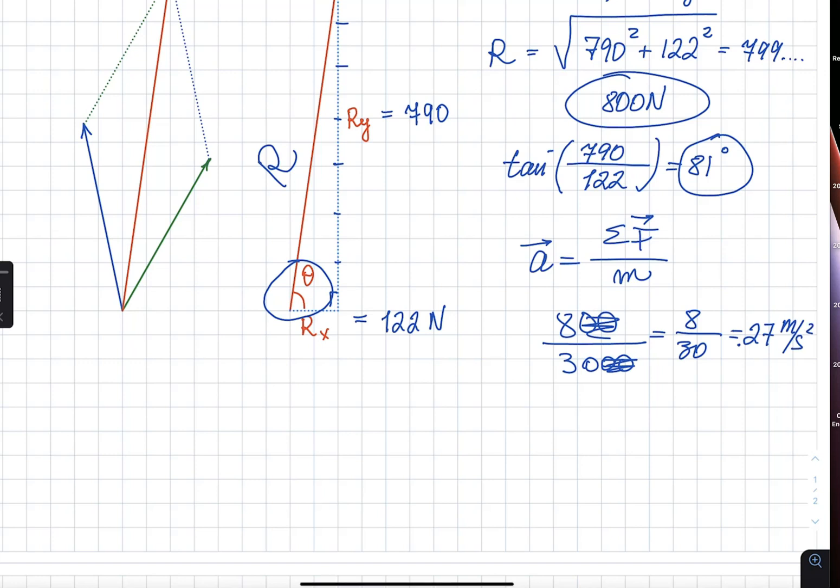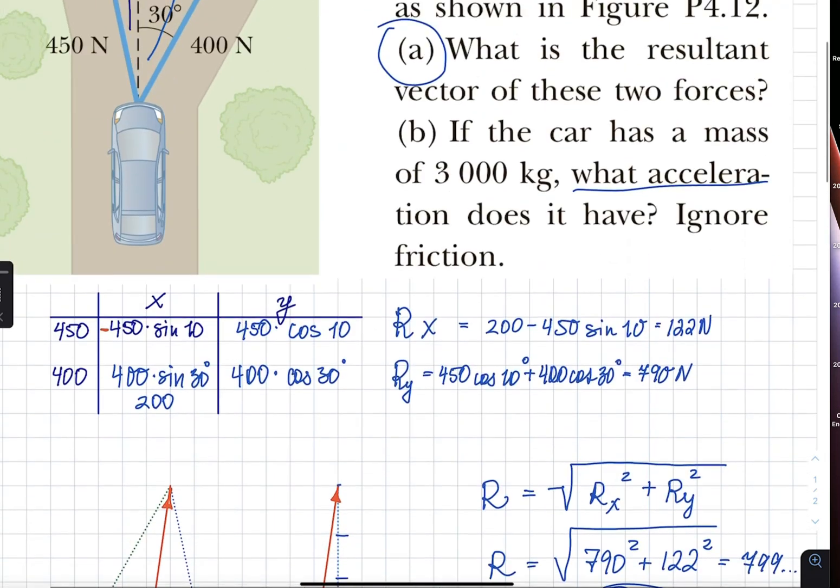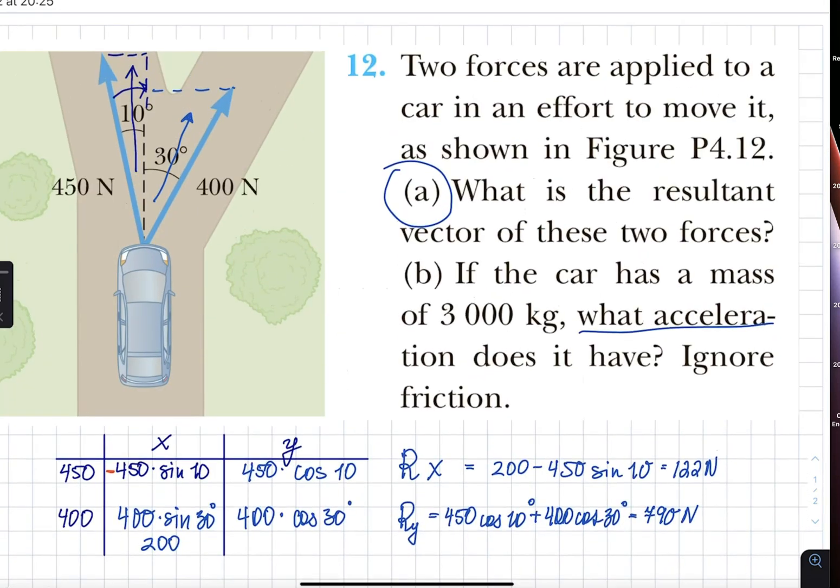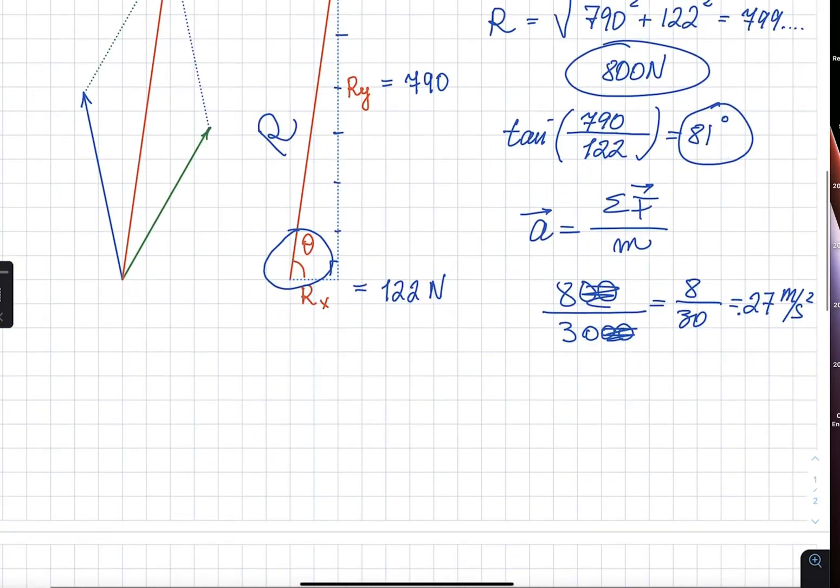So, 0.27 meters per second squared. Mind you, somebody's pulling that car. It's not like the car is driving. They're trying to pull that car. Hence, a small acceleration of 0.27 meters per second squared. And the direction, the same as the force, 81 degrees to the horizontal.